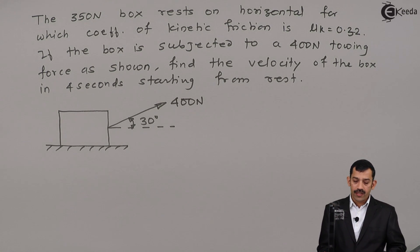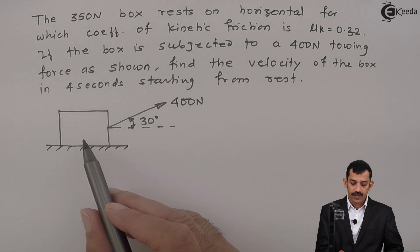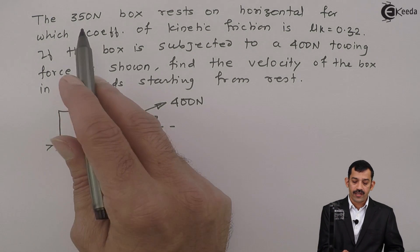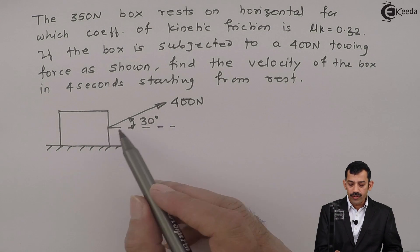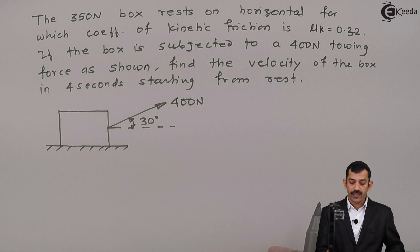That means in this case what is given: this block is having some weight equal to 350 Newton. Towing force means what? Pull type of force is acting. Inclination is 30 degrees.